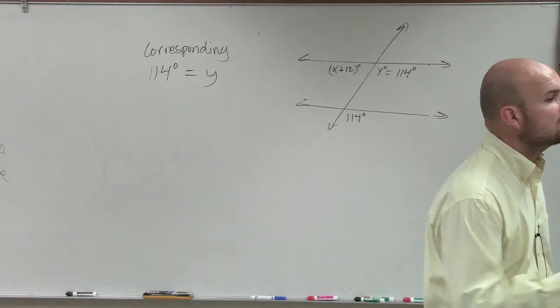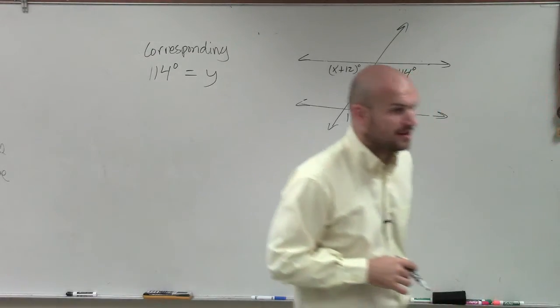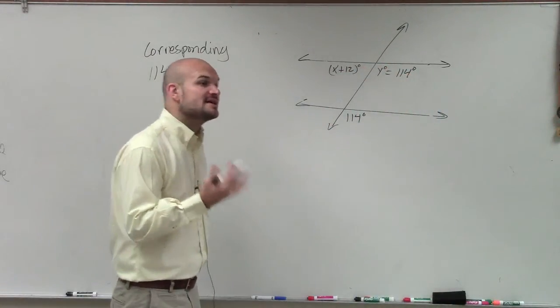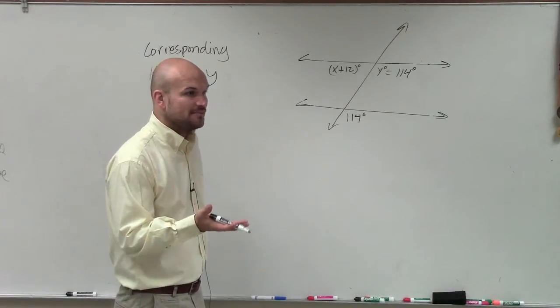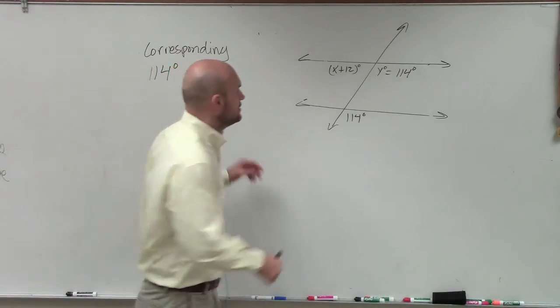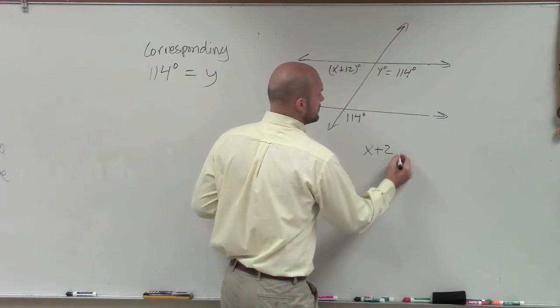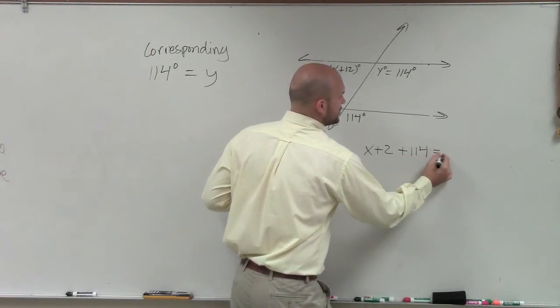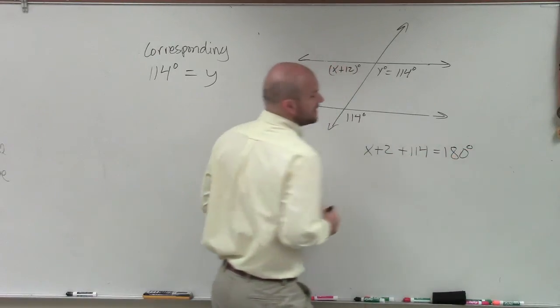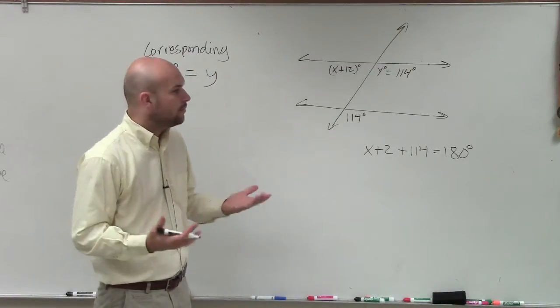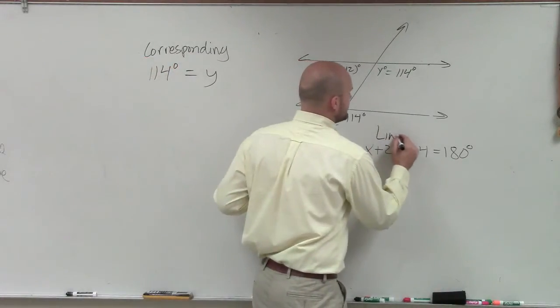A linear pair are supplementary as well, right? And what that means is, since they're supplementary, they add up to 180. So I'm going to write x plus 2 plus 114 degrees equals 180 degrees. Why? Because they are a linear pair.